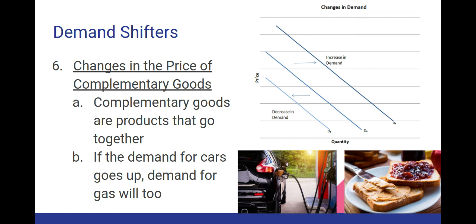Similarly, with peanut butter and jelly or tennis rackets and tennis balls, if the demand for one of those things goes up, the demand for the complementary good — the thing that goes well with it — will go up as well. So this has been our notes for Section 3. If you have any questions, hop in during my office hours or just send me an email and I will help you as best I can. Have a good rest of your day.